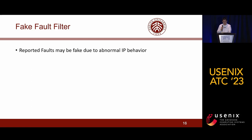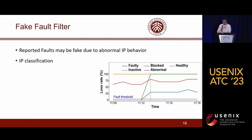The fake fault filter is responsible for filtering out fake faults from all reported faults. We observe that reported faults may be falsely identified due to abnormal IP behavior. To address this issue, we classify the representative IP addresses of victim ASes into five categories according to their behavior during the fault: the faulty IPs, the blocked IPs, the healthy IPs, the inactive IPs, and the abnormal IPs.